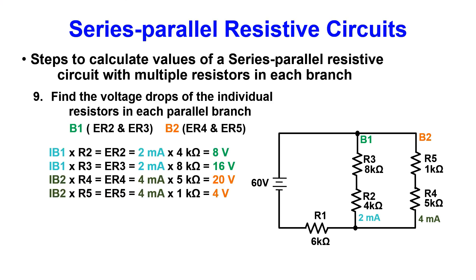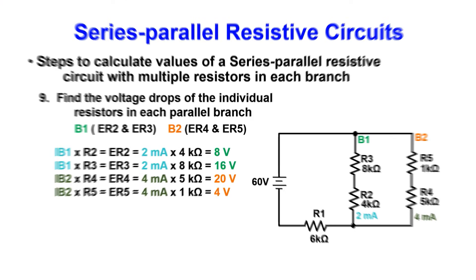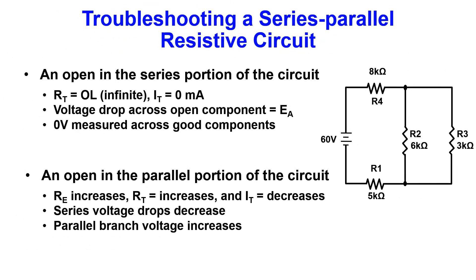Now that we can calculate values, let us take a little peek at some troubleshooting for series parallel circuits. An open in the series portion of the circuit causes RT to increase to infinite. Current will drop to zero and the voltage measurement across the open component will measure applied voltage.